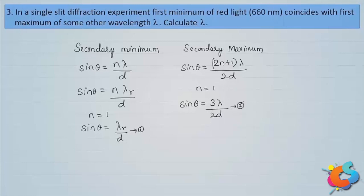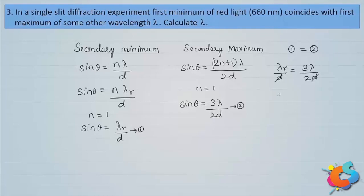Equating the two expressions: λᵣ/d = 3λ/2d. Since the slit width d remains the same throughout the experiment, it cancels from both sides. Solving for the unknown wavelength: λ = 2λᵣ/3.